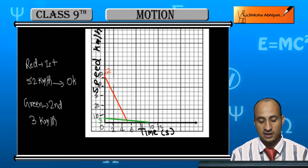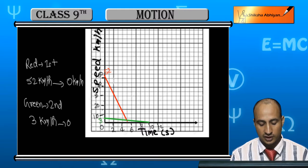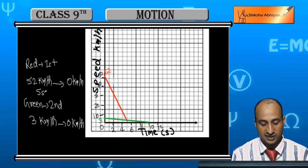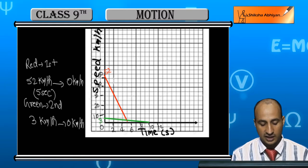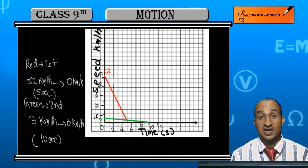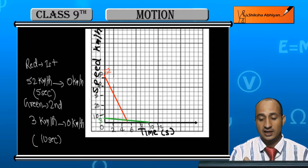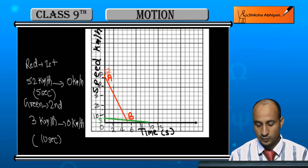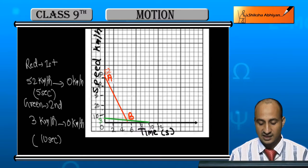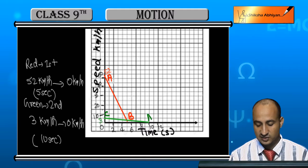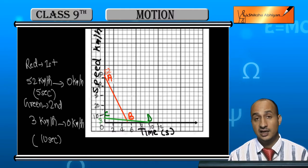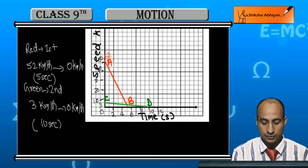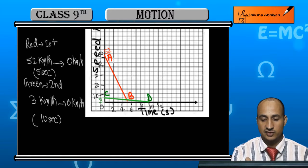I have to take the corresponding points on the graph for each driver. This point represents the second driver's starting speed, and we will take this area of the triangle for our calculation.